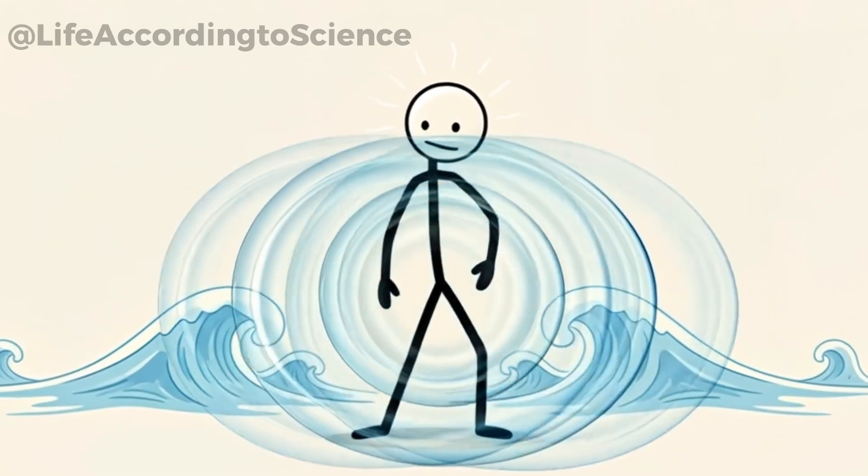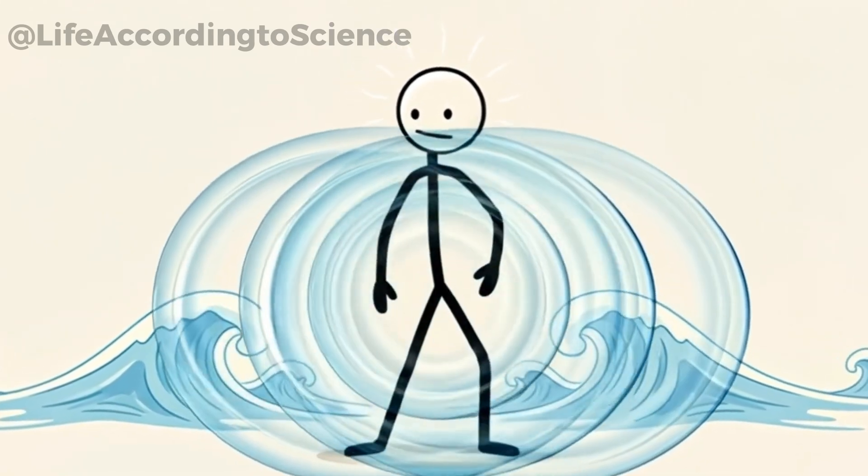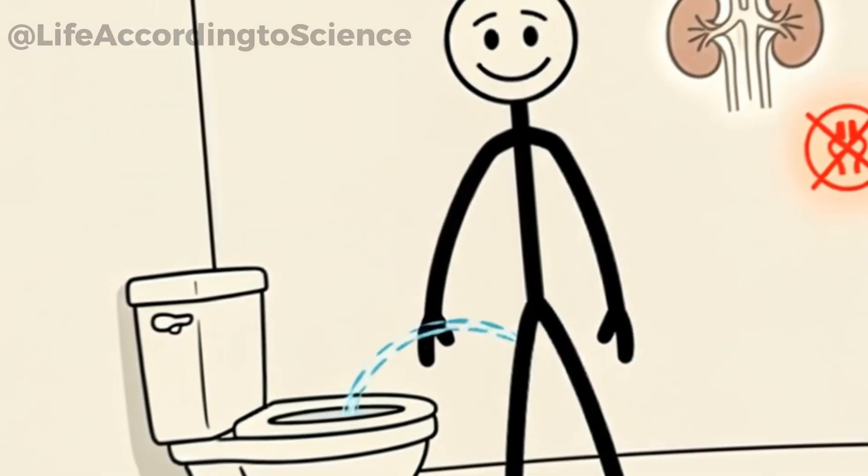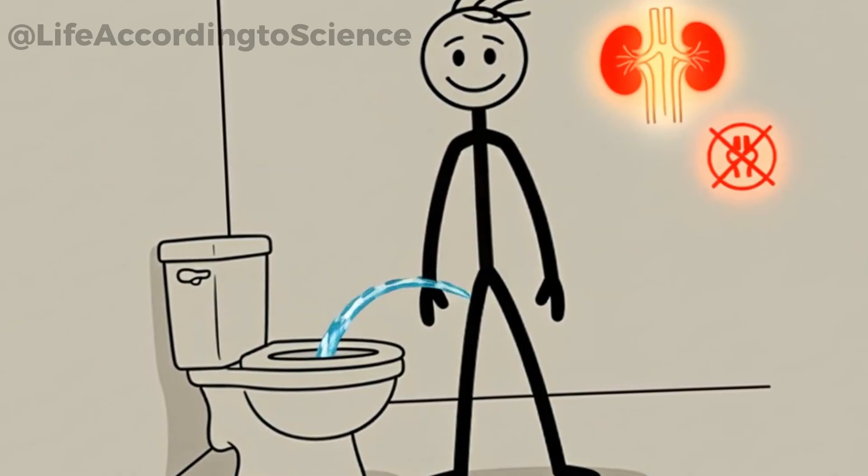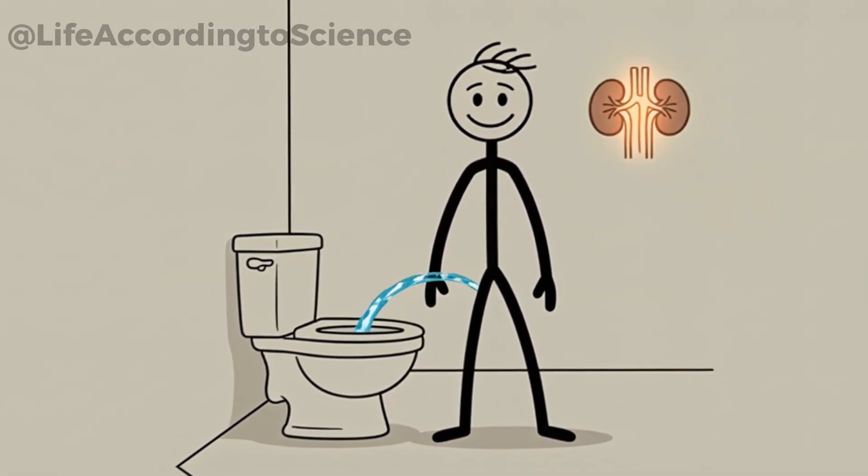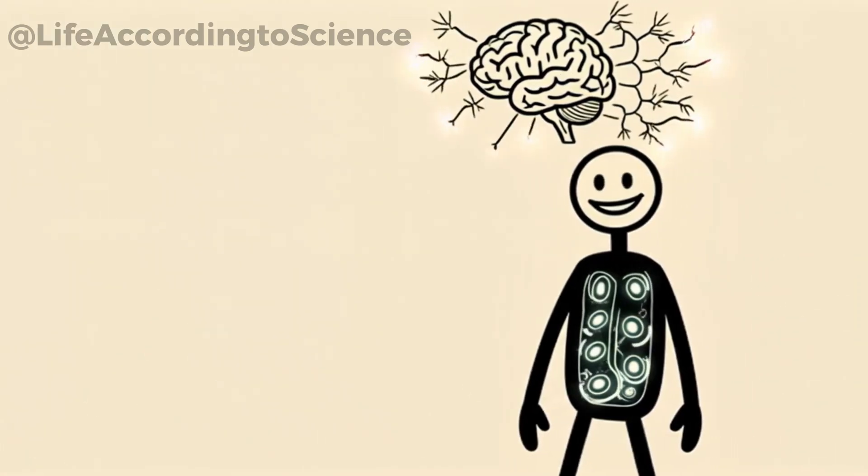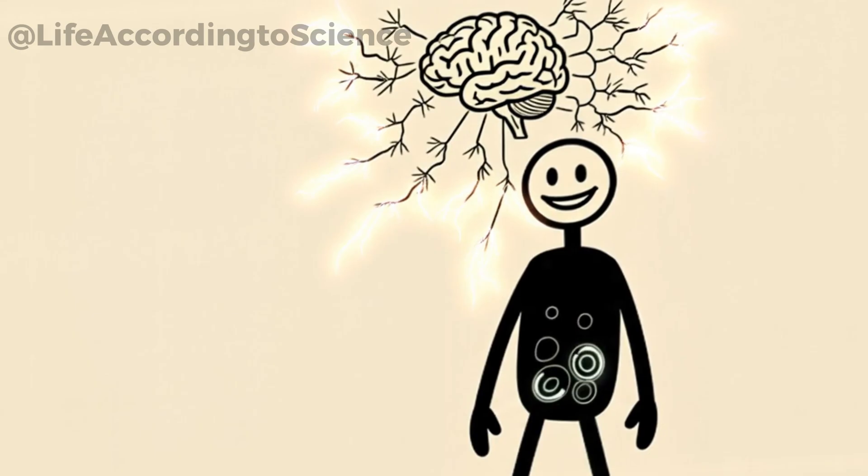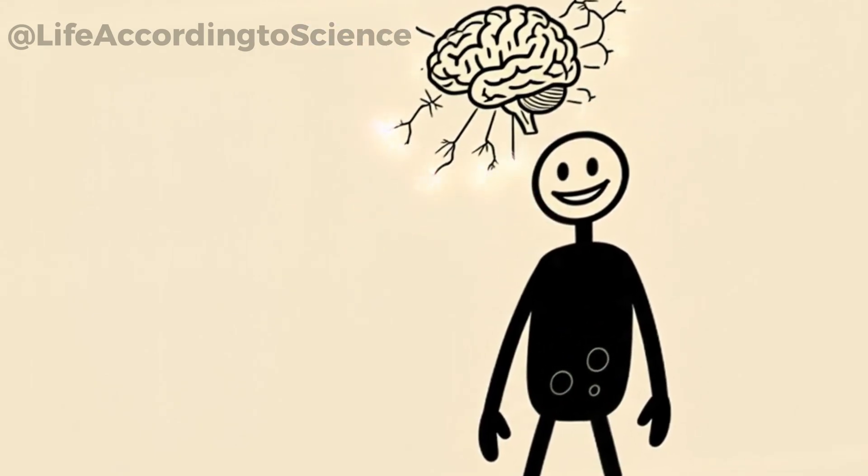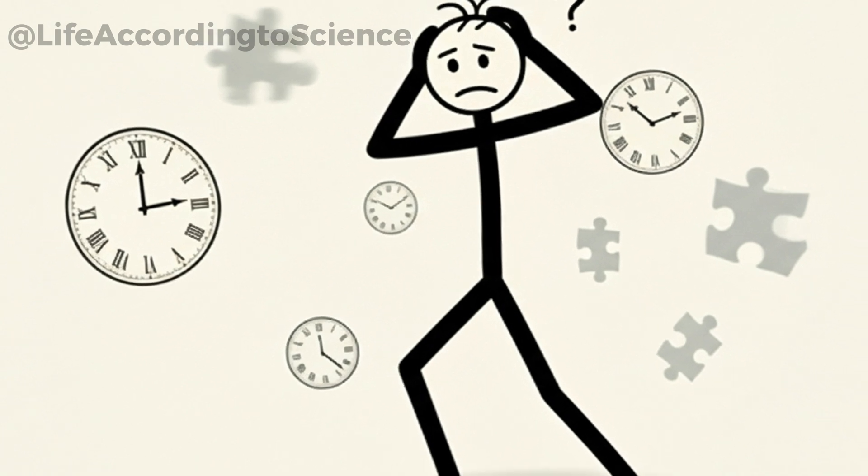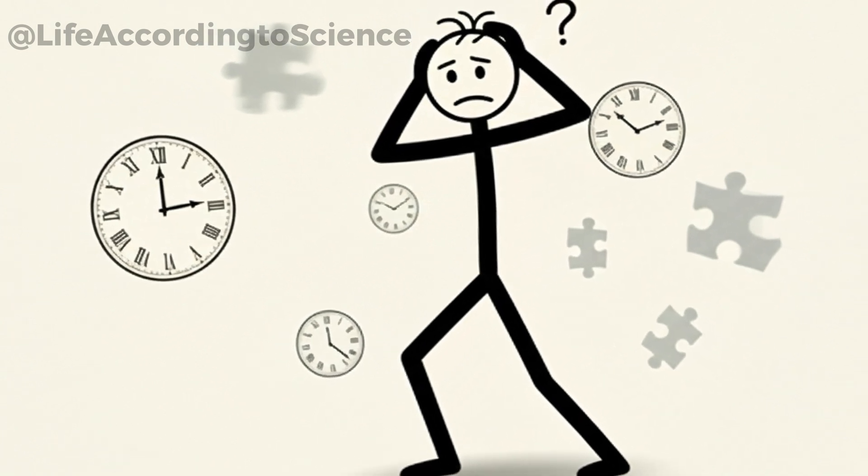Blood alcohol levels rise, and your body begins to redistribute water to dilute it. That's why beer makes you urinate more. Alcohol suppresses vasopressin, the hormone that helps the kidneys retain water. You're literally draining hydration from your own cells. Meanwhile, your brain slows down communication between neurons. Reaction times drop, memory formation weakens, and your judgment becomes fuzzy.